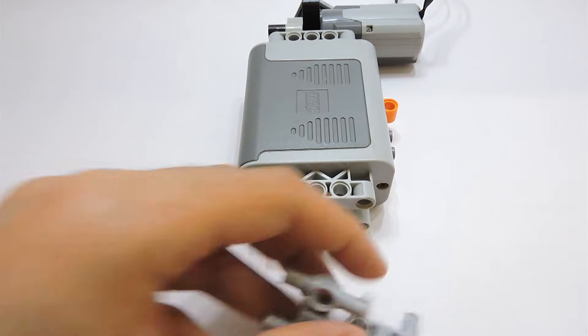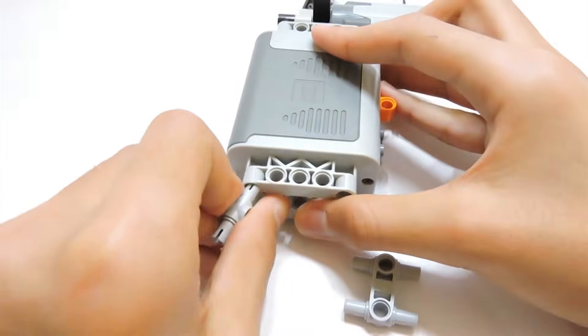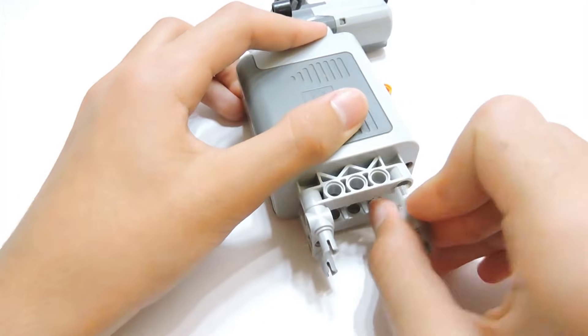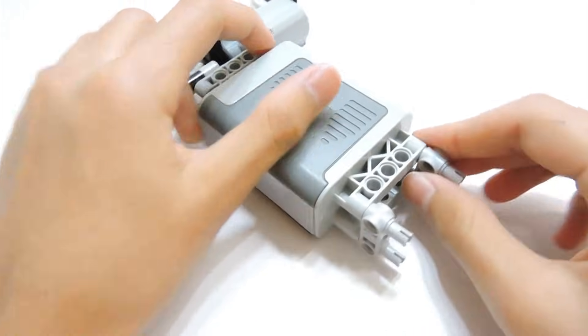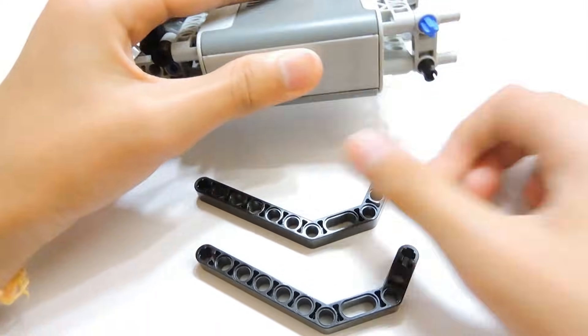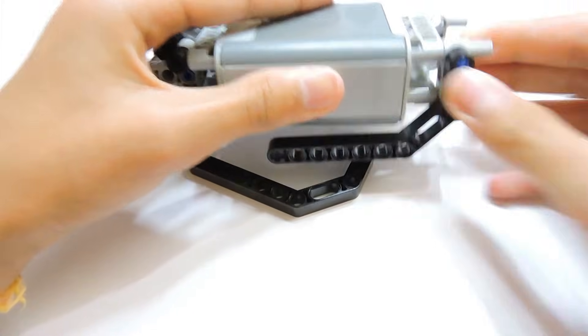Next, we want to attach two beams to the battery box for support. For that, we'll attach these two pieces to the front of the battery box using some connectors. Once you've done that, do the same for the other side too.